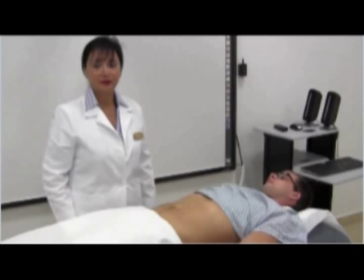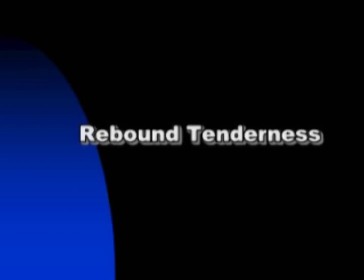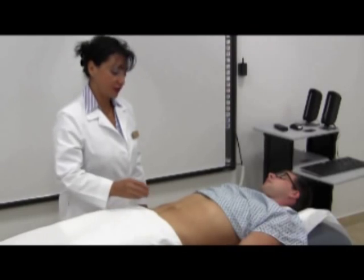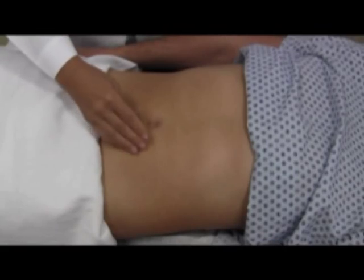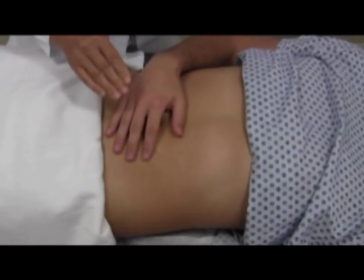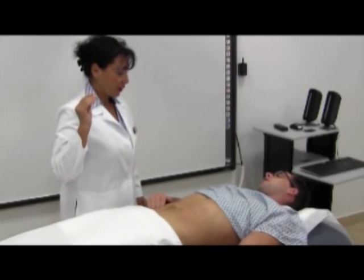Now we are going to show you how to perform special techniques of abdominal examination. Special techniques include assessment for peritonitis, appendicitis, acute cholecystitis, ascites, and ventral hernias. Rebound tenderness is a sign of an acute abdomen. Ask the patient which hurts more — when I press or let go? Press down with your fingers firmly and slowly and then withdraw your hand quickly. The maneuver is positive if withdrawal produces pain.